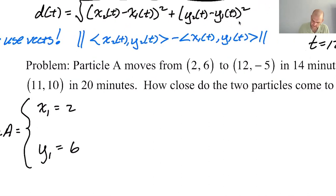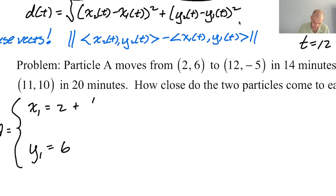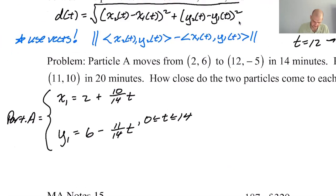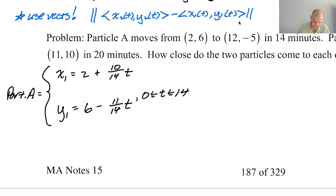2, 6. Alright, so you're gonna pick up 10 in 14 minutes and you're gonna lose 11 in 14 minutes. 0 to 14. So far, I think that's okay. And then, well, maybe I should have drawn that smaller.